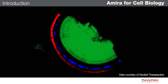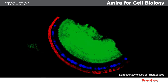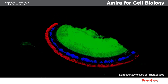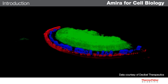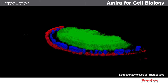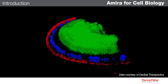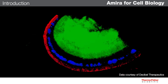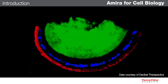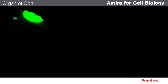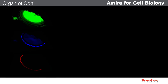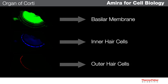Here we have a 3-channel 3D fluorescent image showing a section of murine cochlea. Our goal is to analyze the morphology of the organ of Corti, which includes inner and outer hair cells lining a basilar membrane. To start, we will separate each of these channels into their own 3D volumes. We will use the green channel to segment the basilar membrane, then the blue and red channels to segment the inner and outer hair cells respectively.